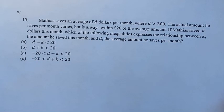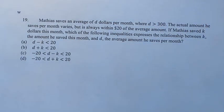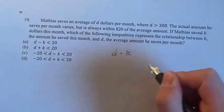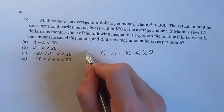So we're told that the actual amount is always within $20 of the average amount. The difference between them, D minus K, is either going to be less than 20 or greater than negative 20.